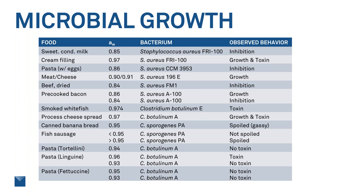What I also want to point out is that he put the Staph in milk, cream filling, eggs, meat, cheese, beef, and bacon — all these different food matrices. But it didn't matter. The water activity limit stayed the same. So that cutoff is bacterium-specific, not food-matrix-related, which is really important. This means you can use water activity limits across any industry.